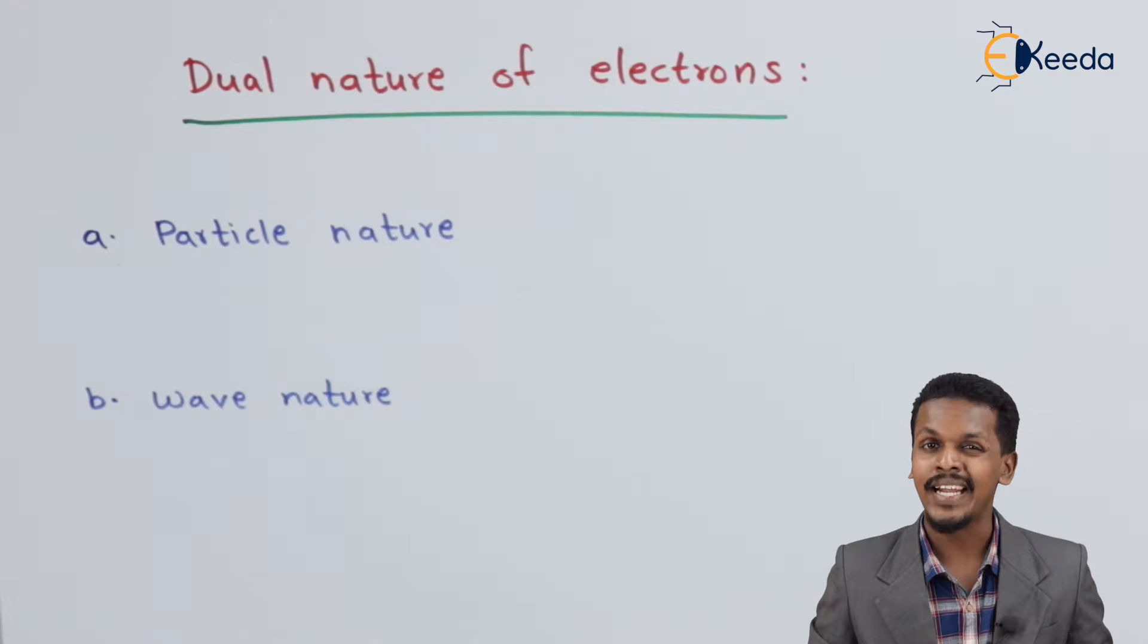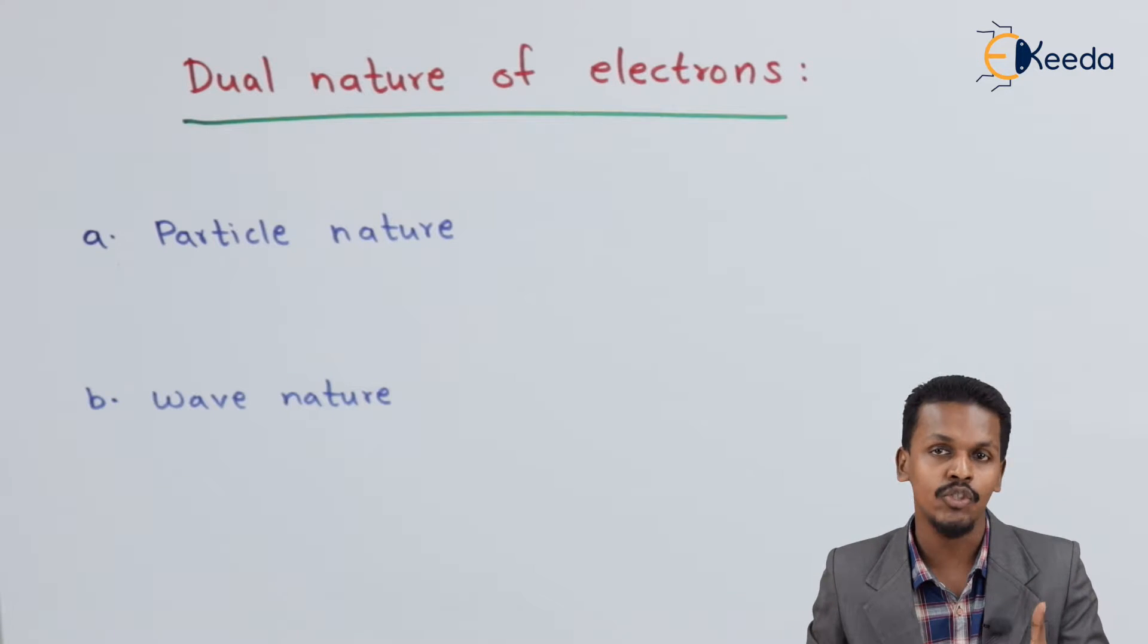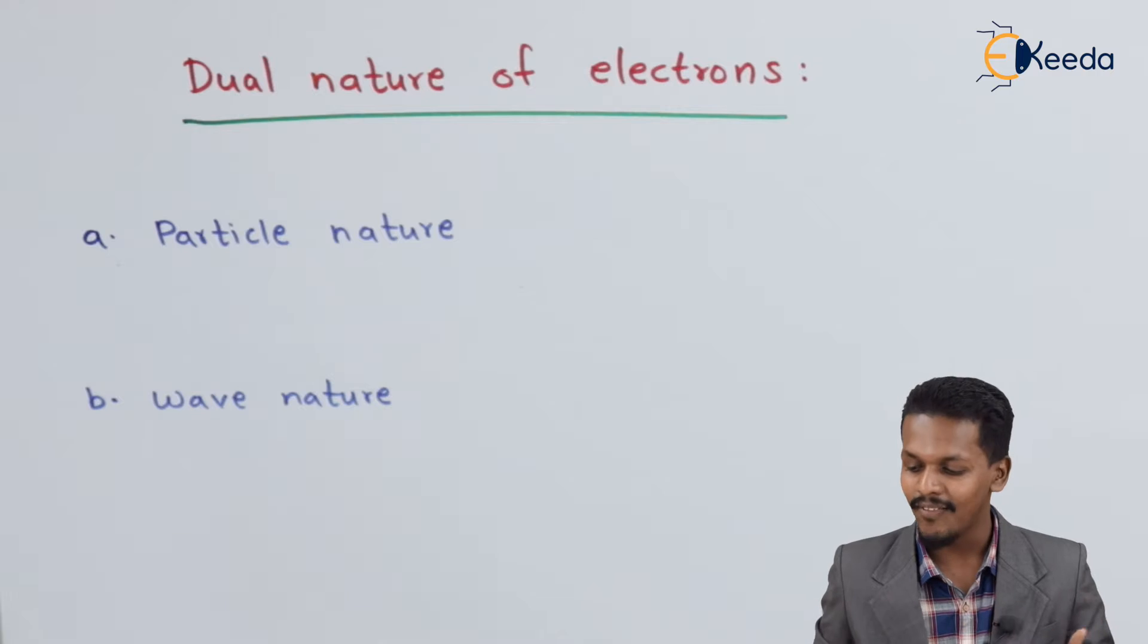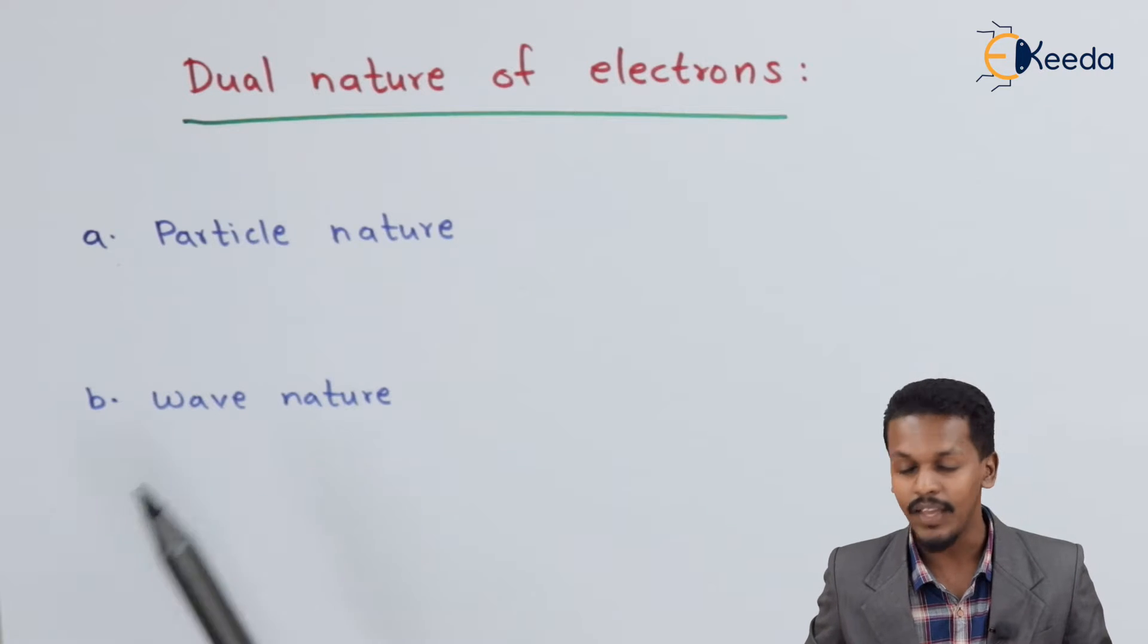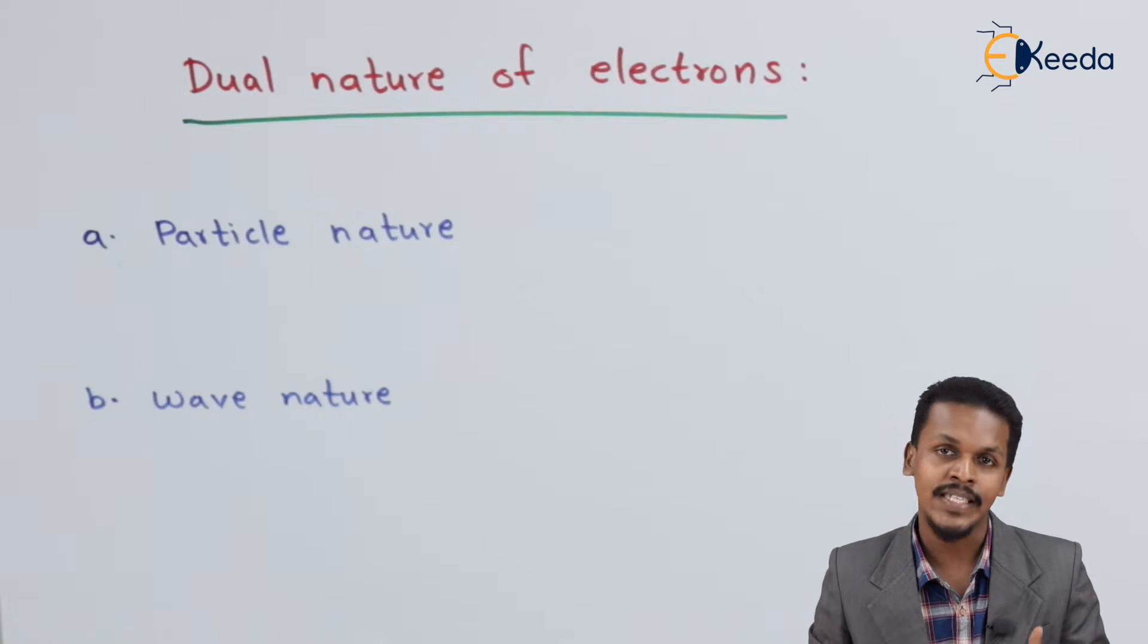So friends, in this topic, let me discuss the dual nature of electrons. The electrons can behave like a particle as well as a wave. This is what we discussed in the previous lecture also.